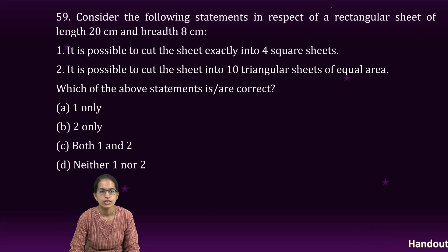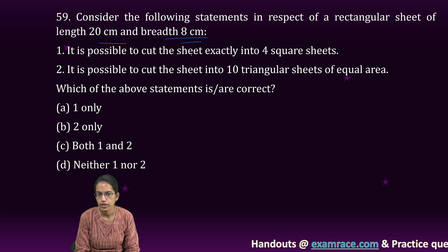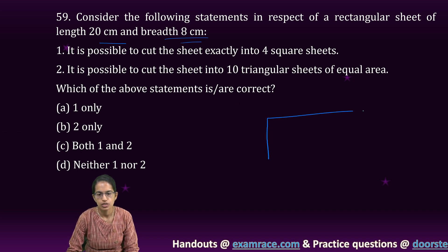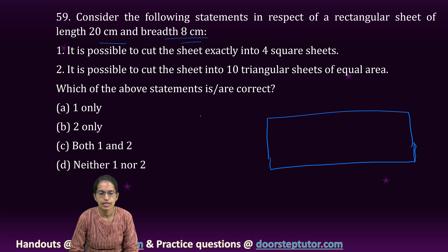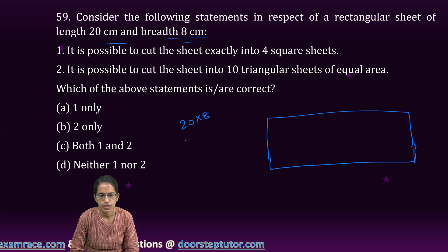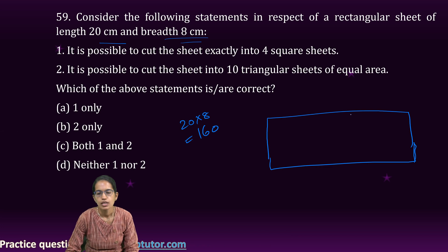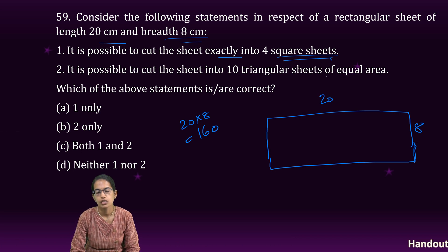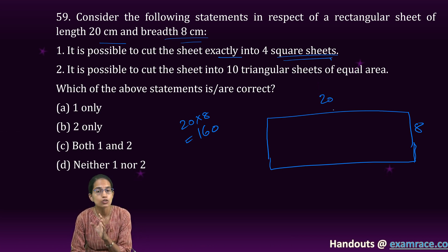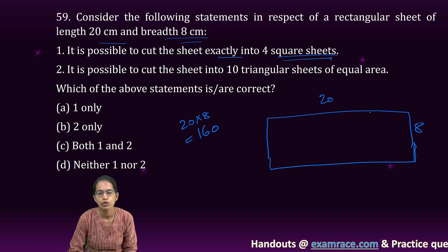Another question. A rectangular sheet 20 by 8 centimeters. The total area for this rectangle would be 20 into 8, which is 160. I have to divide exactly into 4 sheets. They should be 4 squares, not equal but 4 squares.